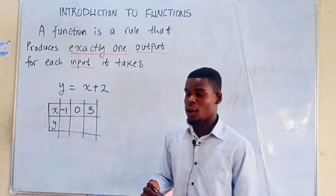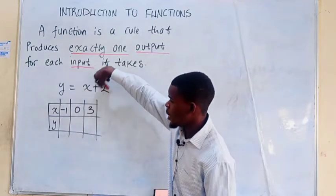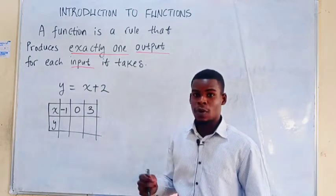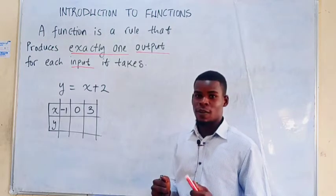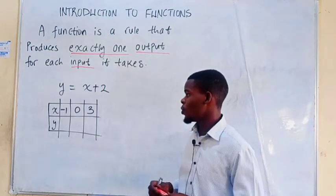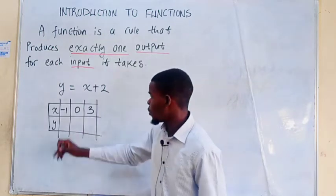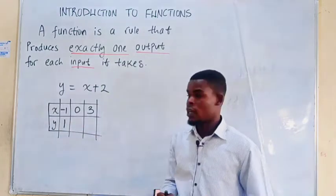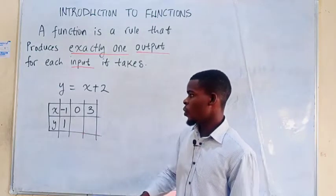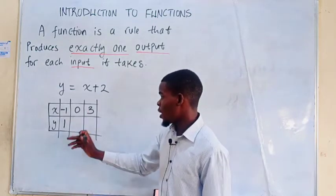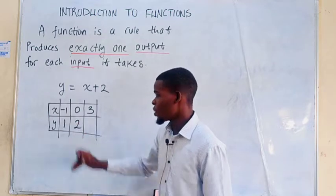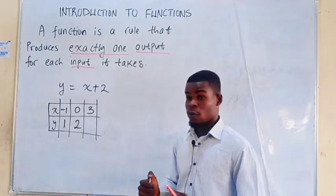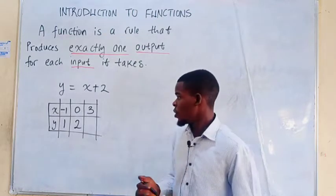When x is negative 1, all we need to do is to plug negative 1 into the right-hand side of this equation. That will be negative 1 plus 2. When you add 2 with negative 1, just like subtracting 1 from 2, let's do the arithmetic. All you get is 1. So when you plug in negative 1 in place of x, you get 1 as a result. We plug in 0 in place of x here, we'll get our y to be 2. So that tells us that the values of x are the input, while that of y are the output.